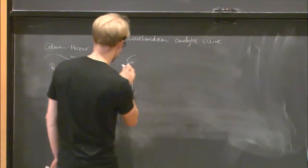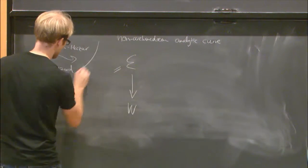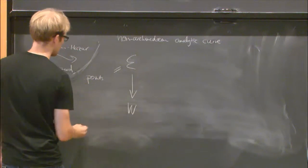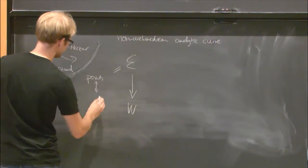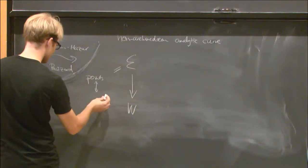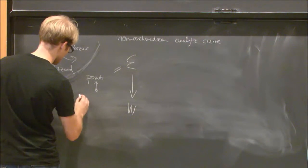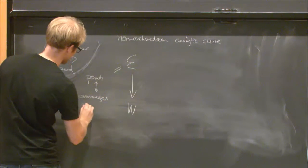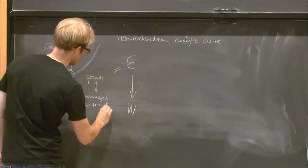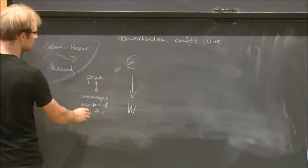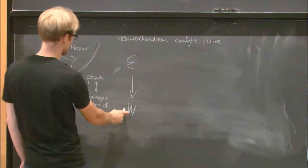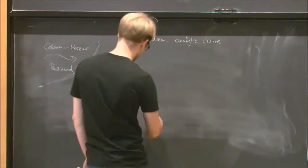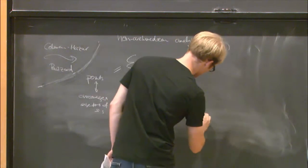So, this space, points correspond, or roughly speaking, at least correspond to these overconvergent eigenforms of finite slope, or rather, the systems of Hecke eigenvalues. And the map down simply takes one of these gadgets to its weight. The weight space is a quite simple thing.